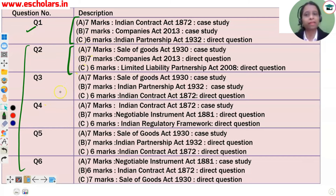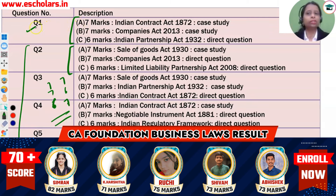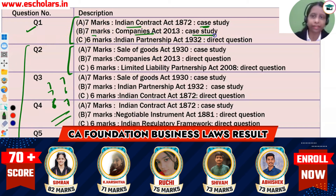Questions 2 through 6 also have three parts each. Most questions follow the pattern of 7, 7, and 6 marks for parts A, B, and C respectively. Question number 1, Part A (7 marks) comes from the Indian Contract Act and will be a case study-based question. Part B (7 marks) comes from the Companies Act — also case study-based. Part C (6 marks) comes from Indian Partnership Act — direct question.